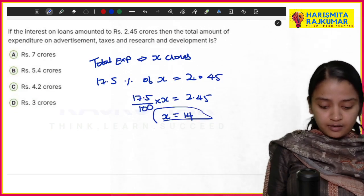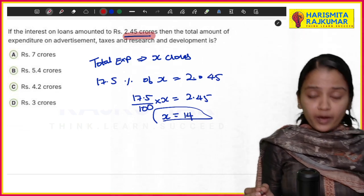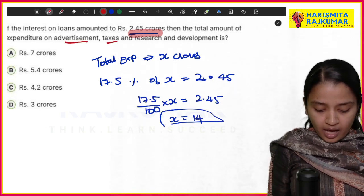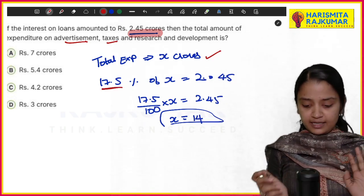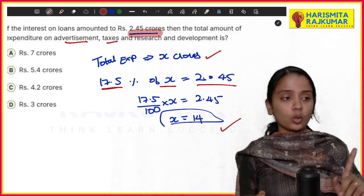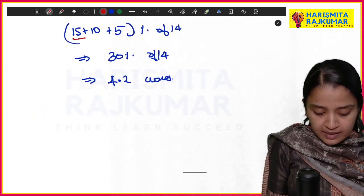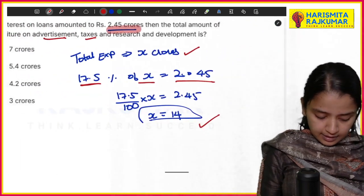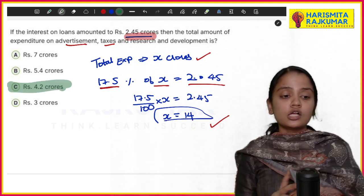Next question: if interest on loan amounts to 2.45 crores, find the total expenditure on taxes, advertisement, and research. Let total expenditure be x crores. Interest on loan is 17.5% of x = 2.45 crores, so we can find x = 14 crores. Adding the percentages for advertisement, taxes, and research, that percentage of 14 crores gives 4.2 crores as the final answer.